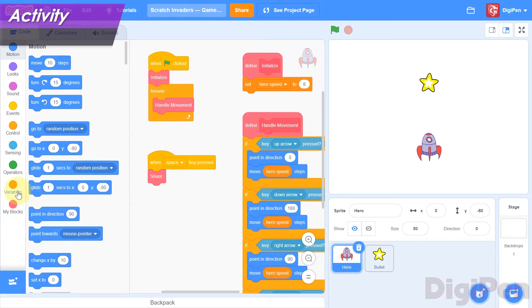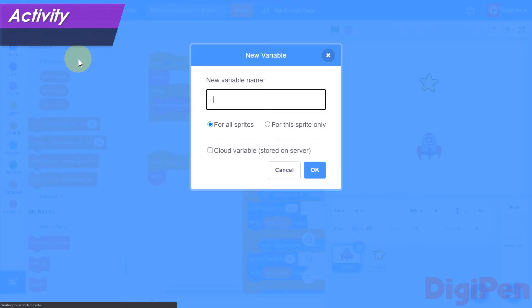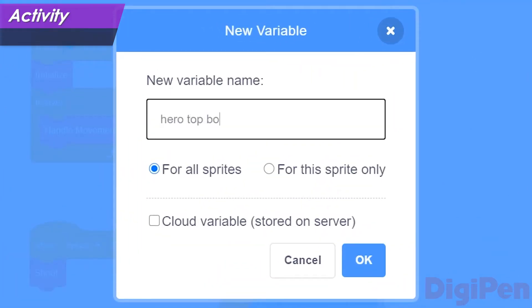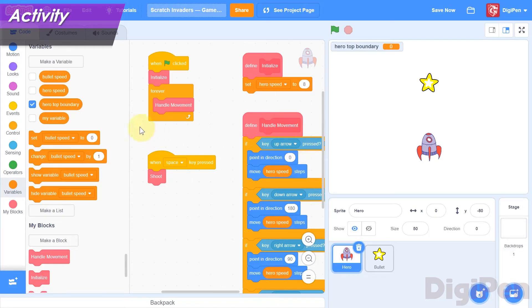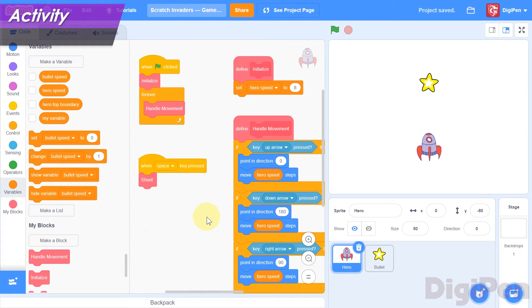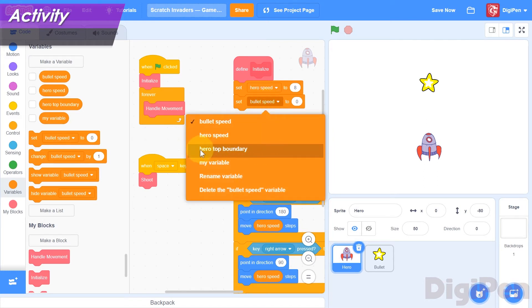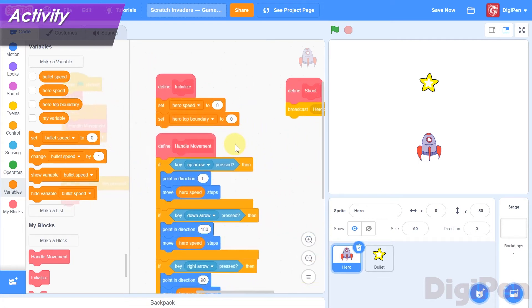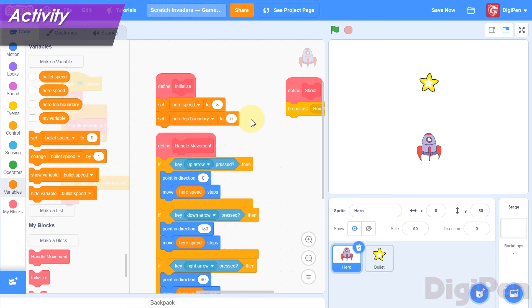Click the orange Variables category on the left, and then click the Make a Variable button. Name the new variable Hero Top Boundary. You can toggle the box next to its reporter block in the block palette to hide its watcher in the game window. Before we use it, we should initialize it. Make sure the hero sprite is selected, then find the Set block in the block palette. Drag it into the code area, and add it to the body of the initialize function. Make sure that Hero Top Boundary is selected from its variable list. Now we need to determine the value to set it to. You can work this out yourself, or you can just use the number negative 90, which should work pretty well regardless of your hero's sprite. Whatever number you end up with, type it into the value field of the Set block.